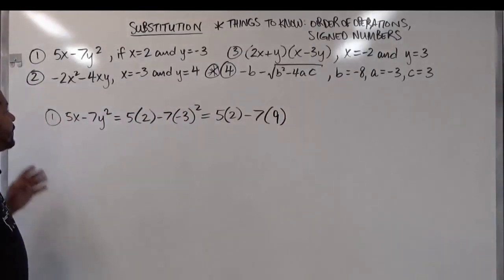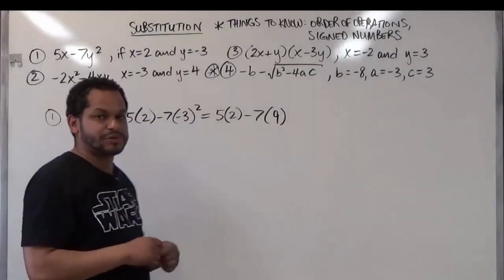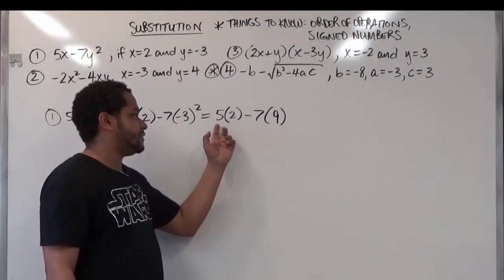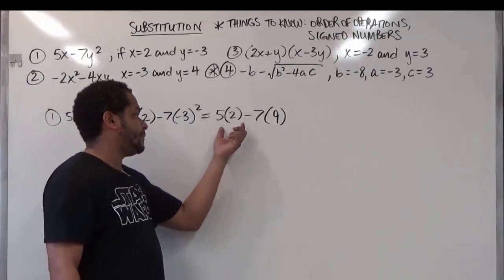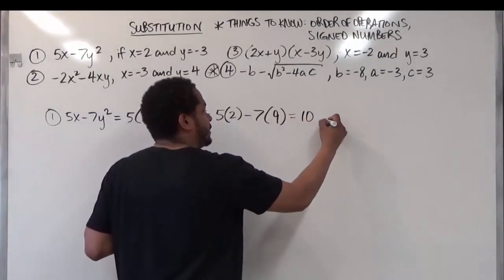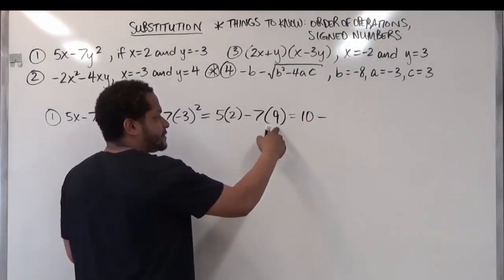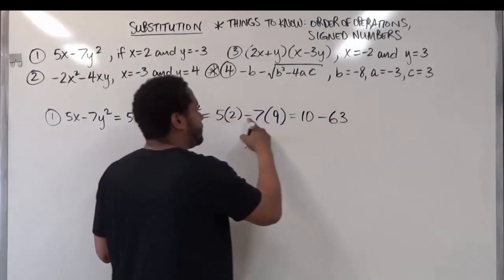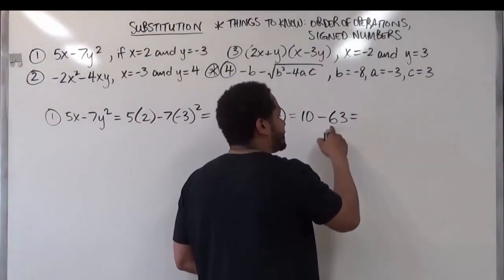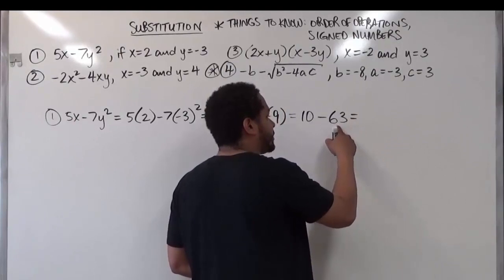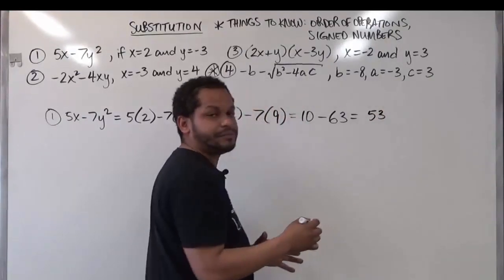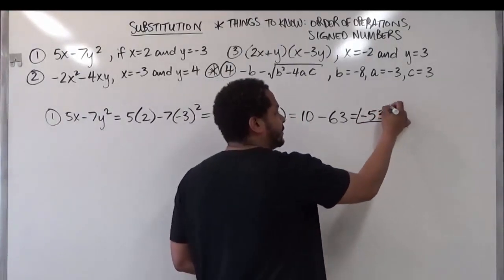We finish the order of operations. After exponents we have division and multiplication left to right — we have no division, but multiplication on both sides. So we do multiplication from left to right: 5 times 2 is 10, take away 7 times 9 which is 63, keeping the negative symbol between them since we haven't done that operation yet. Now 10 take away 63: the bigger number minus the smaller is 63 minus 10, which is 53, and we keep the sign of the larger number — so this becomes negative 53. We're done with the first one.